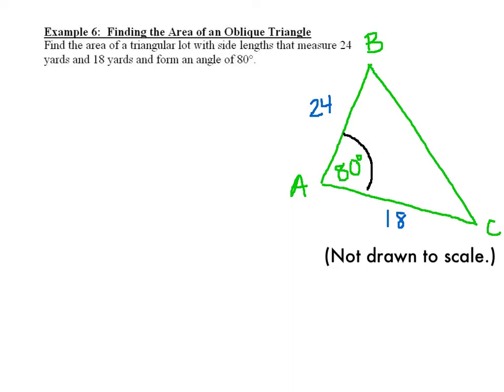Before, when you were able to have a right triangle, you'd just use 1/2 times your base times your height. But here for example 6, you need to use a formula where your area is equal to 1/2 times your two sides times the sine of your included angle.